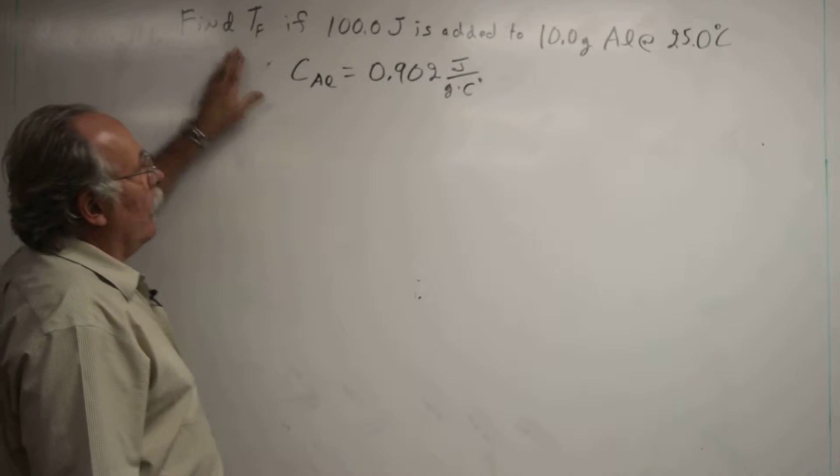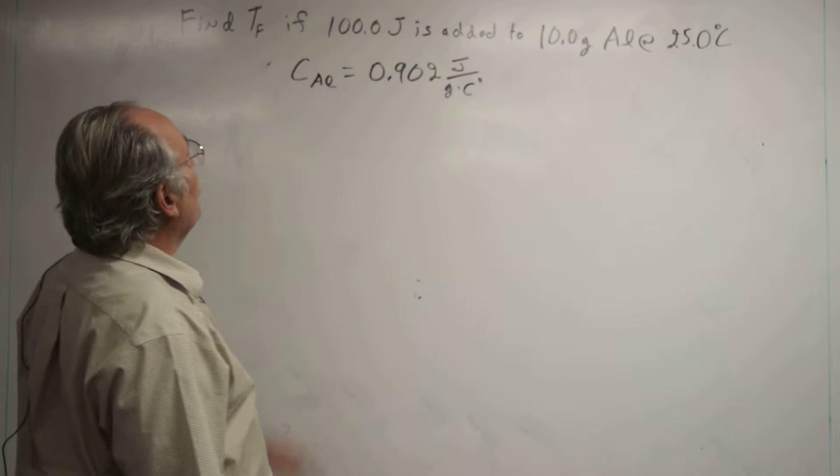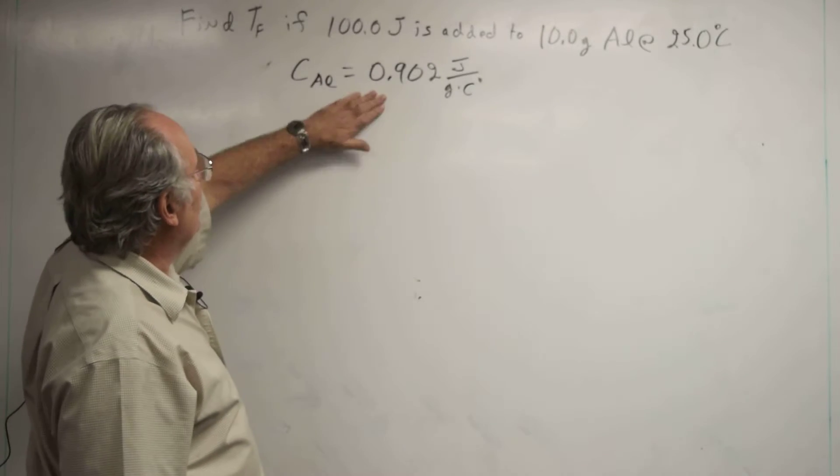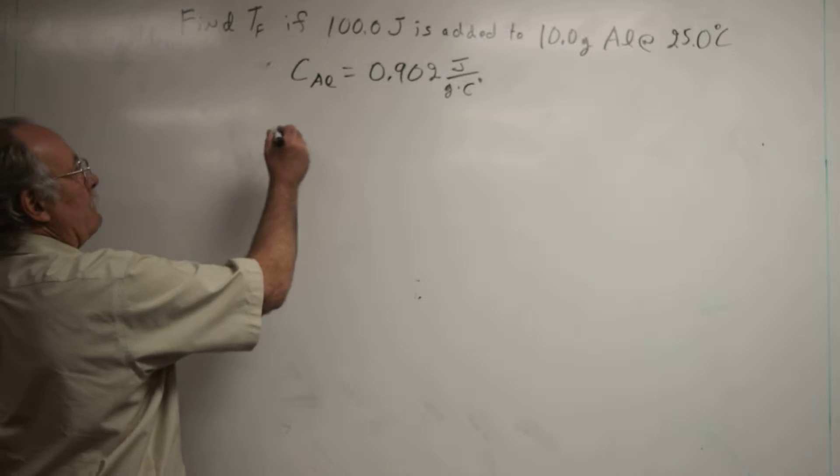We want to find the final temperature of a 10 gram piece of aluminum at 25 degrees C if we add 100 joules. The heat capacity of aluminum is 0.902 joules per gram degrees C.